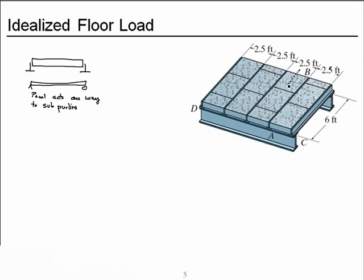And so our tributary width for purlin AB is half of the panel weight from the left side goes to AB, half of the panel from the right side goes to AB for a total tributary width of 2.5 feet.